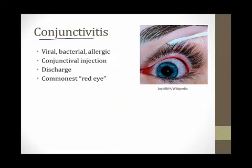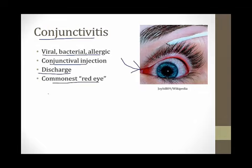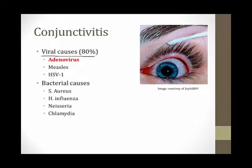Conjunctivitis is inflammation of the conjunctiva. It can be viral, bacterial, or allergic — there are many causes. Patients develop injection of their eye, meaning you can see blood vessels in the conjunctiva over the white sclera, and they often have some form of discharge. Conjunctivitis is very common and is the most common reason patients present to a physician's office with a red eye. Viruses are the most common cause, with adenovirus being the most common etiology. Measles is a special viral cause worth knowing for boards, and as discussed, HSV-1 can cause keratoconjunctivitis. There are also a number of important bacterial causes.